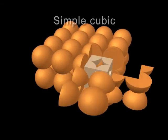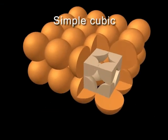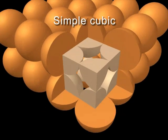In fact, only 52% of the available volume is actually occupied by spheres. Because of this inefficiency, the simple cubic unit cell is seen rarely in nature.